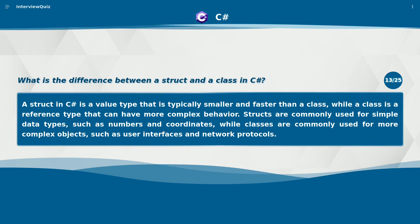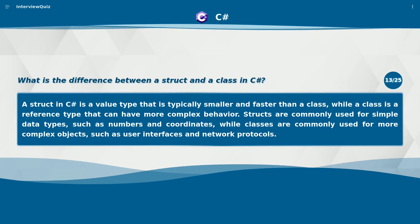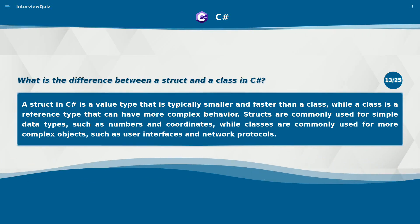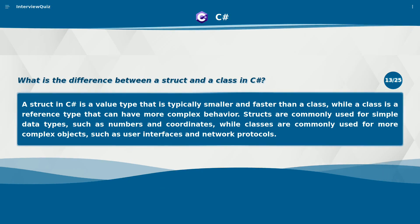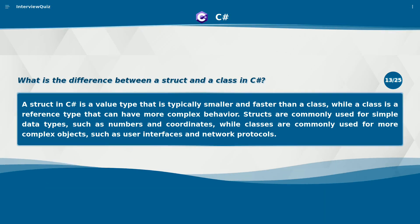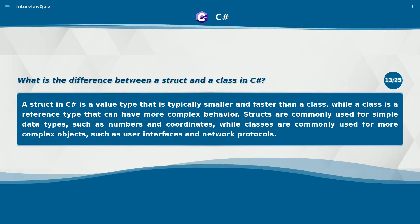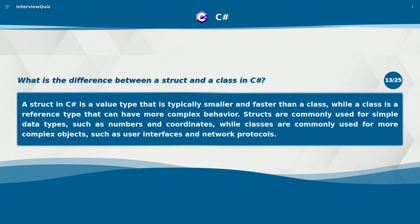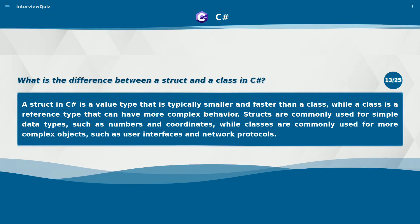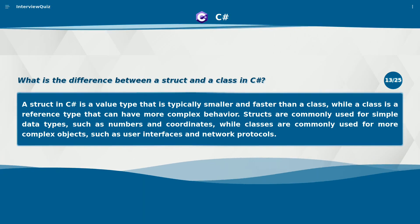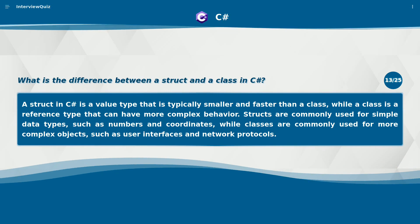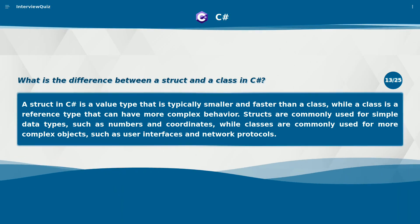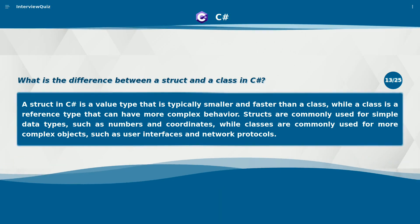What is the difference between a struct and a class in C#? A struct in C# is a value type that is typically smaller and faster than a class, while a class is a reference type that can have more complex behavior. Structs are commonly used for simple data types, such as numbers and coordinates, while classes are commonly used for more complex objects, such as user interfaces and network protocols.